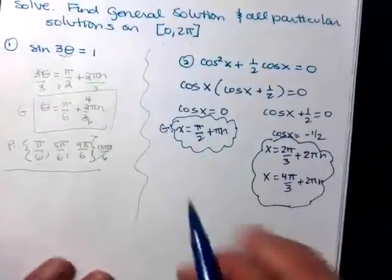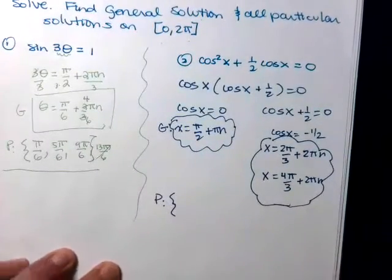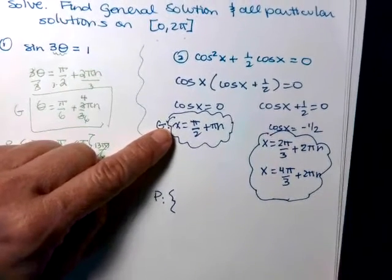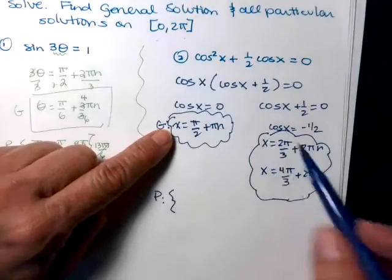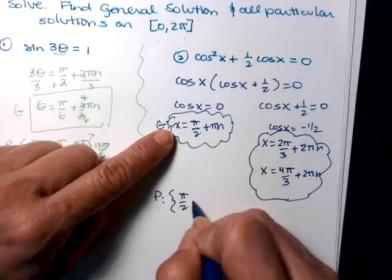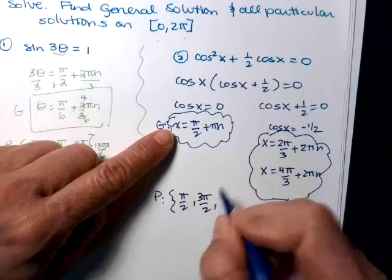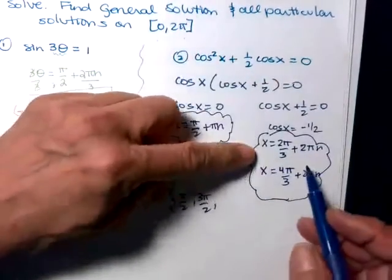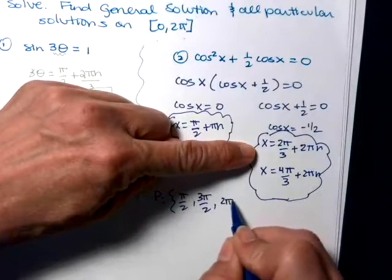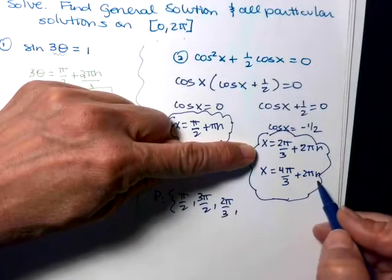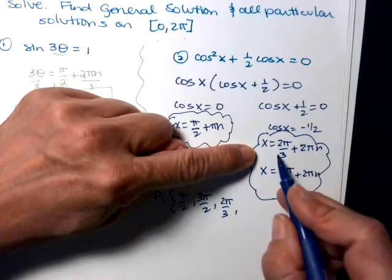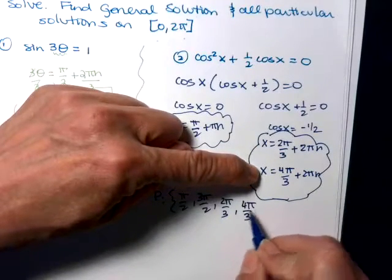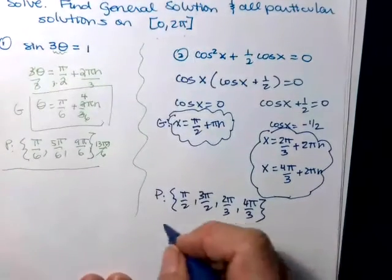To get the particular solutions we run through integer values of n. For x equals pi halves plus pi n: n equals 0 gives pi halves; n equals 1 gives three pi halves; n equals 2 is past 2pi. For x equals two pi thirds plus 2pi n: n equals 0 gives two pi thirds; n equals 1 is already past 2pi. For x equals four pi thirds plus 2pi n: n equals 0 gives four pi thirds. There are all of our particular solutions.